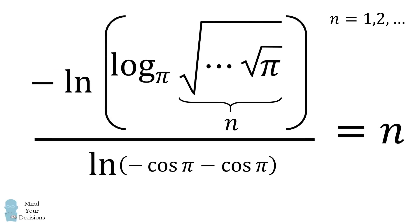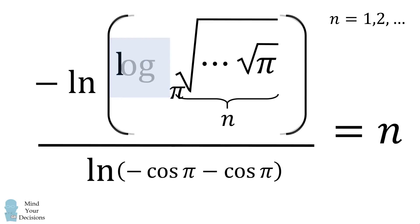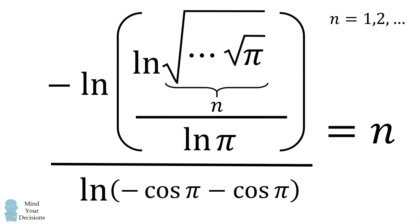We end up with the following fraction. Now here we have log base pi, so we'll again use the change of base formula. So now let's substitute that in and put everything in terms of the natural logarithm.